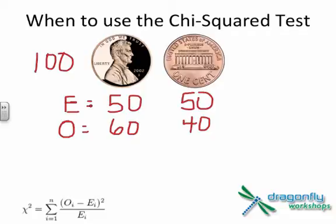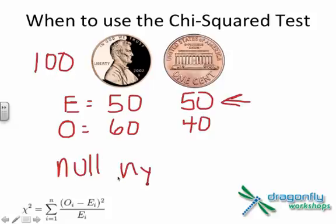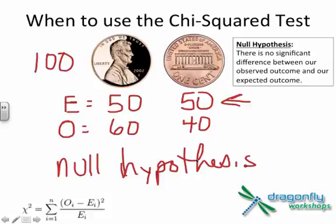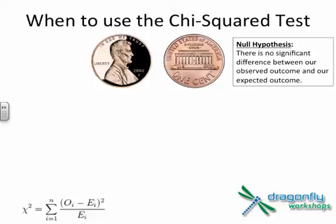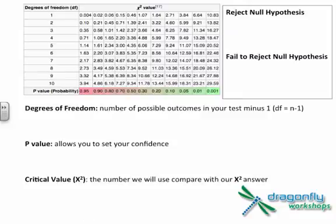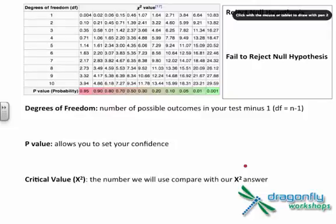What we're trying to do with the Chi-Squared test is to determine whether there is a significant difference between our observed and expected outcomes. In other words, was our observed outcome not significantly different from what we expected, which was 50 and 50. This leads to our null hypothesis. Hopefully you have heard this term if you've taken biology courses. Let's look at that more clearly on the next slide. Our null hypothesis is that there is no significant difference between our observed outcome and our expected outcome.